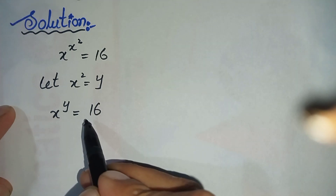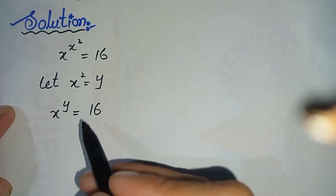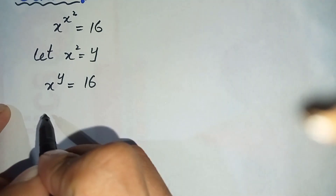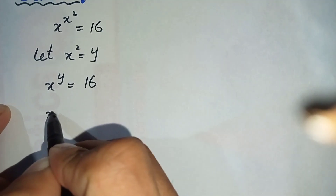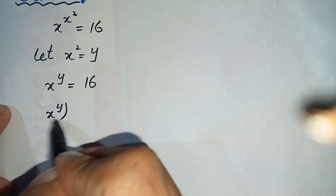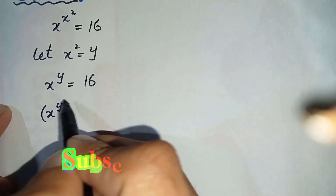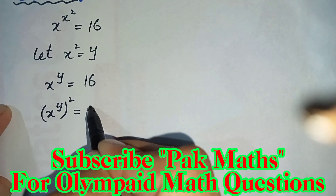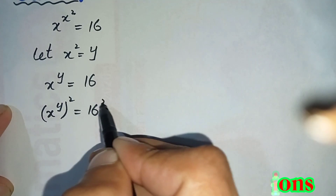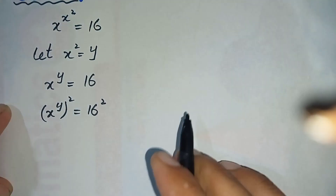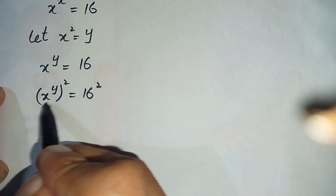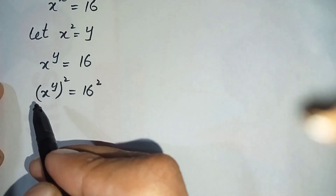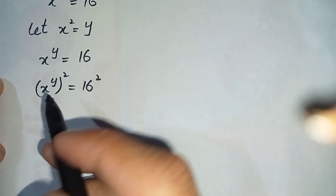In the next step, we will take squares on both sides, so this equation will become x raised to the power y, whole square, is equal to 16 square. On the left hand side we will use the famous exponential property.